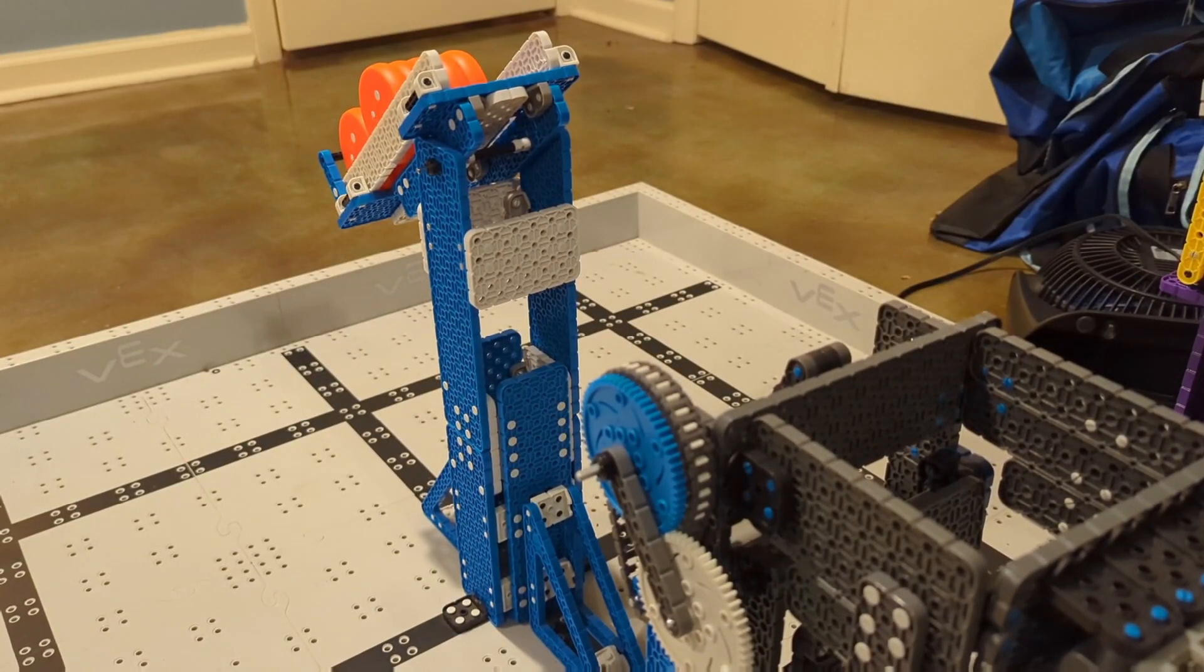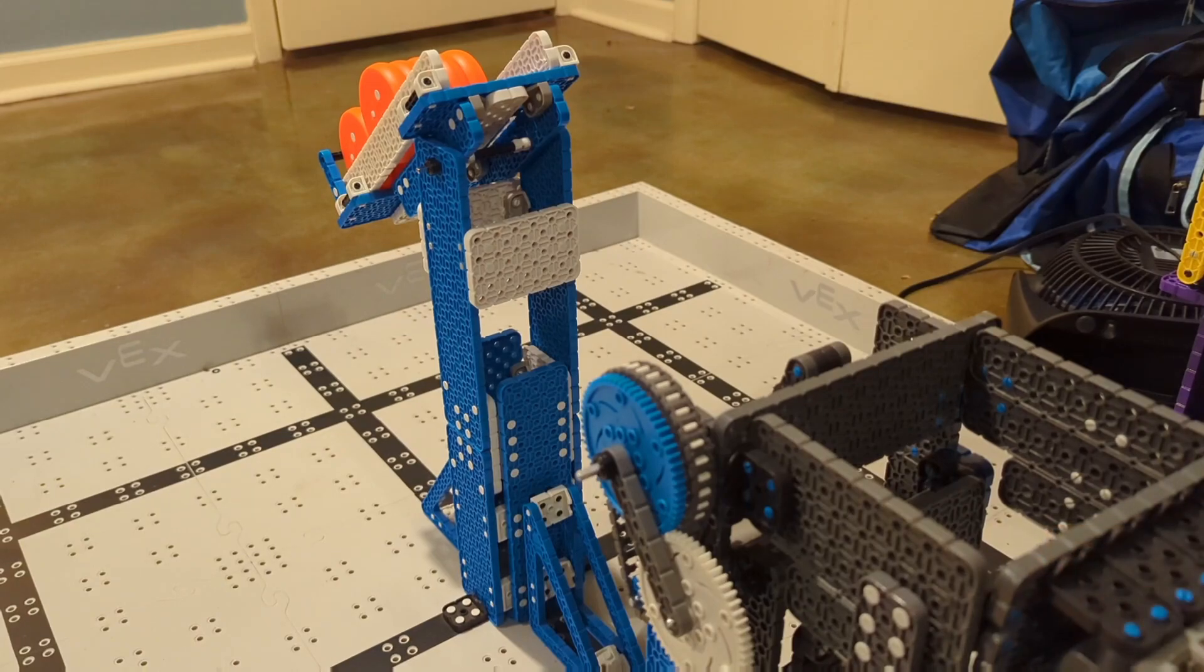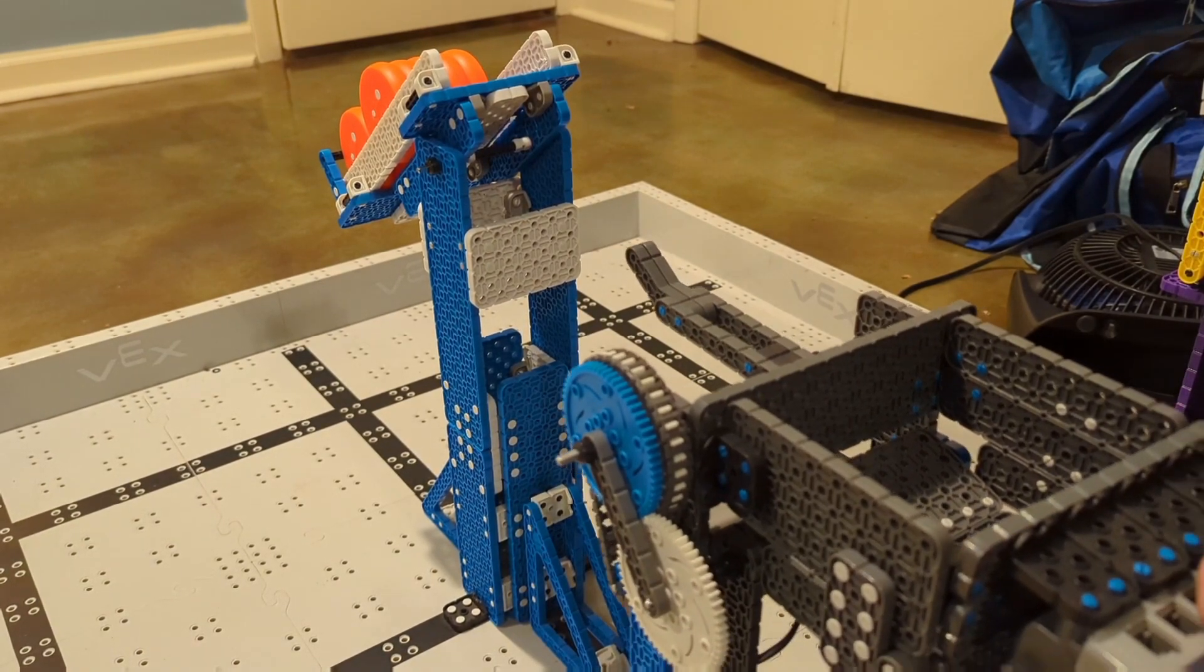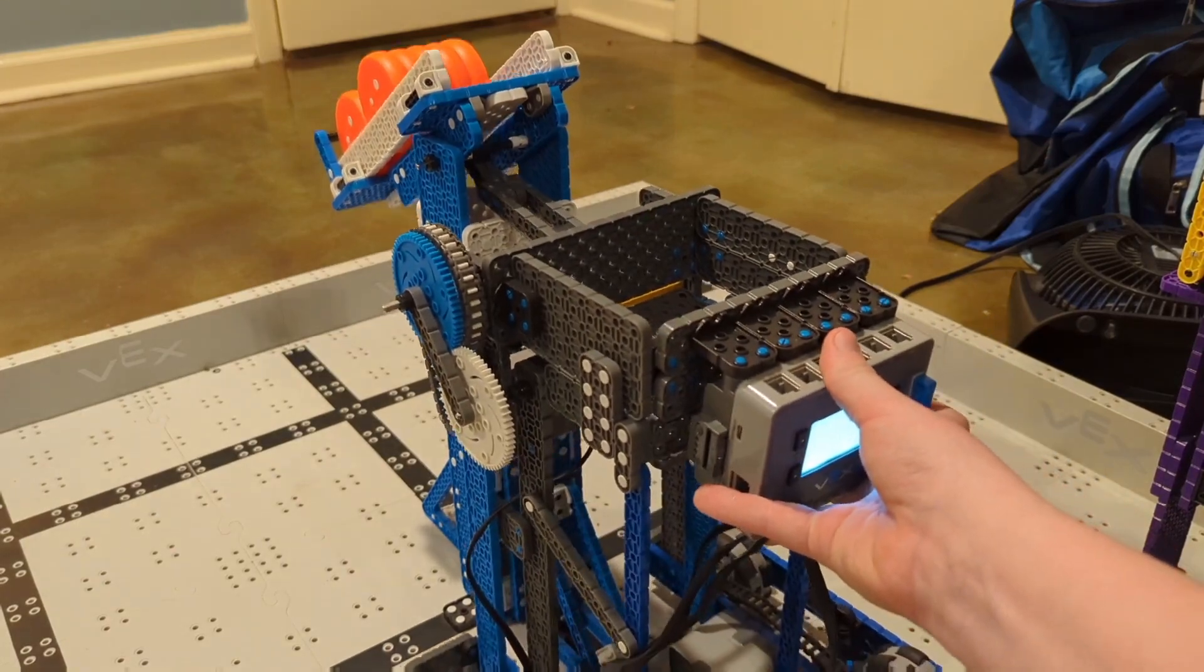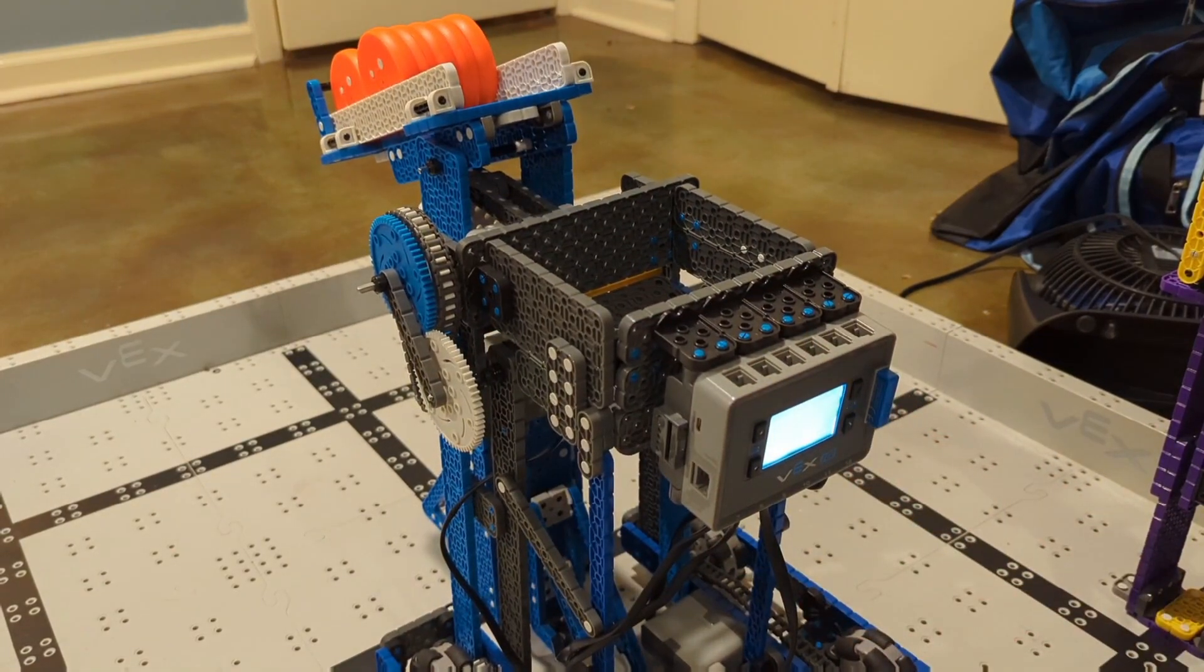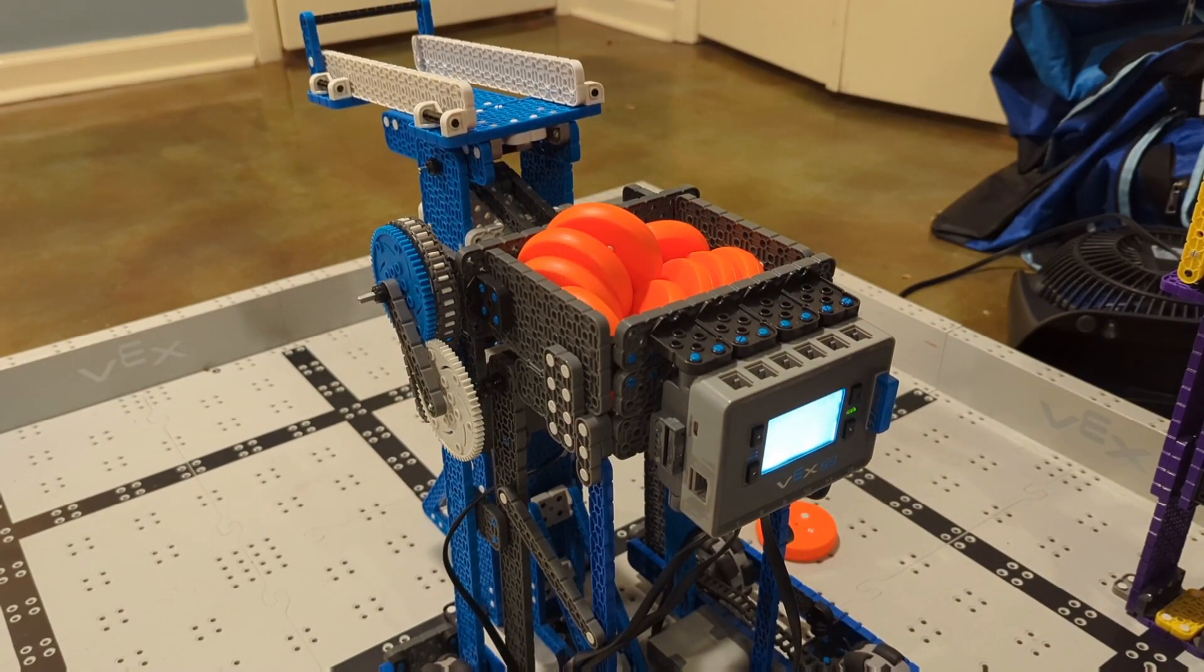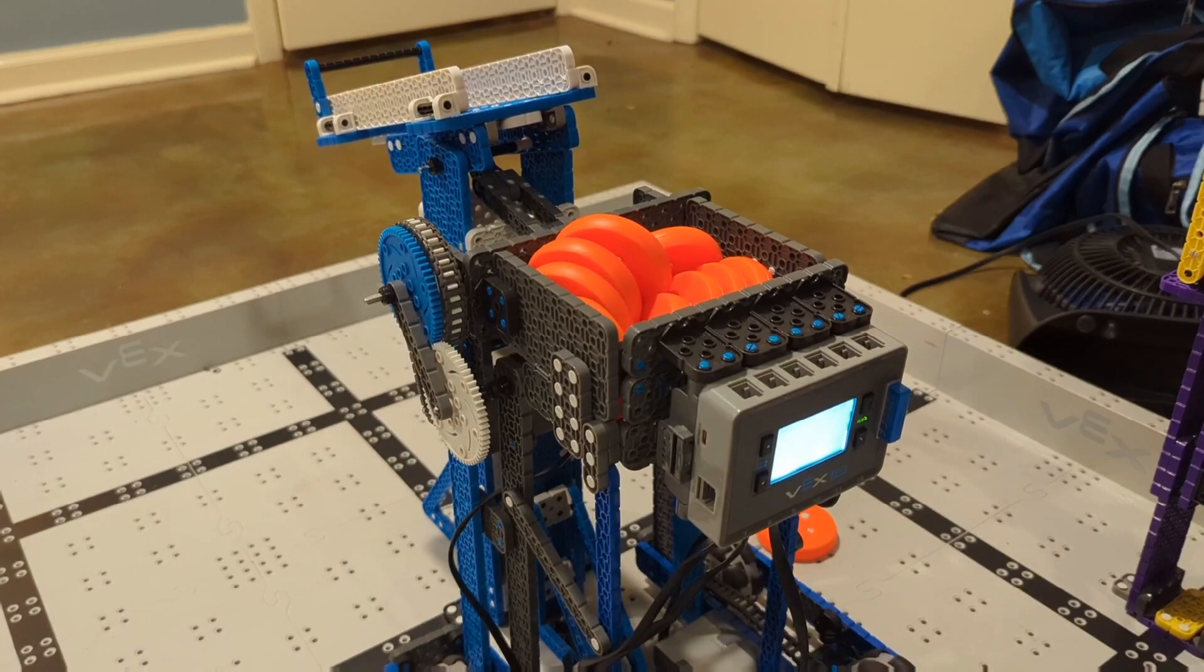Basically how this works is we have the mechanism down to start out with, then we press a button on our controller, and then it goes up to the perfect height. Then we just back into the blue dispenser, like that, and then we lift it up, and it all goes down into this little containment area, which we have for our robot, but you don't really need it.